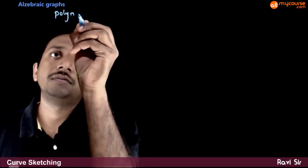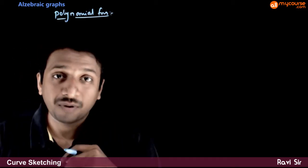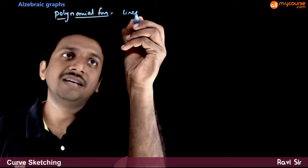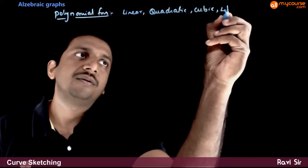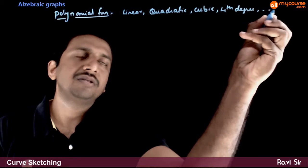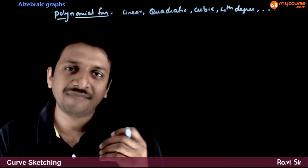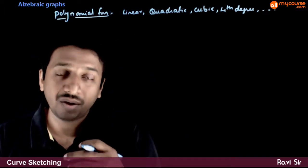Next, let us try to understand the graphs of polynomial functions. As we know, there are different types of polynomial functions depending on the degree of the polynomial. So you have linear, quadratic, cubic, 4th degree, 5th degree, 6th degree, and so on. As the degree of the polynomial increases, the graph becomes more complicated. So first let us try to get some basic idea of how the graphs of polynomials look like.